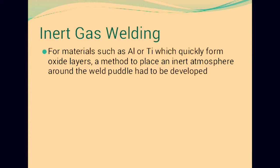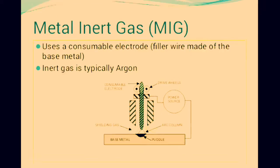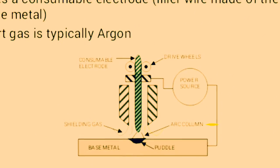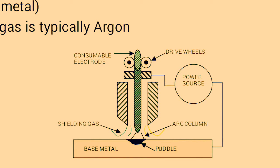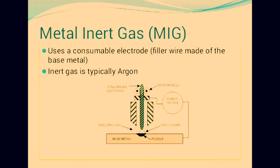Aluminum and titanium quickly form oxide layers and are the metals that require special protection. Metal Inert Gas (MIG) welding was developed. The main parts include consumable electrodes filled with the base metal.